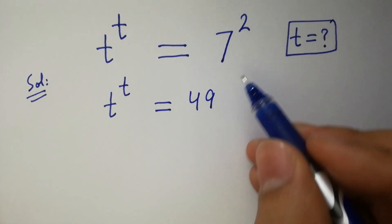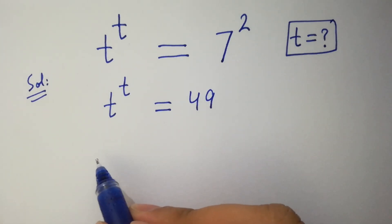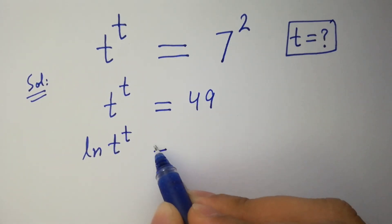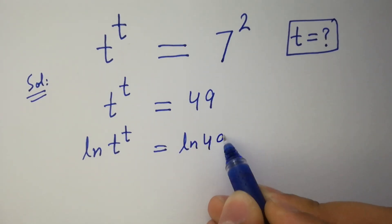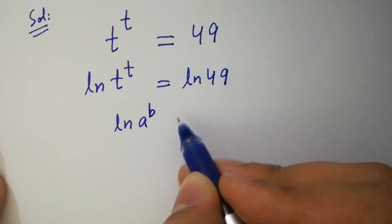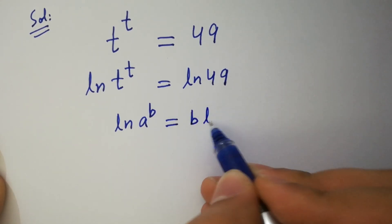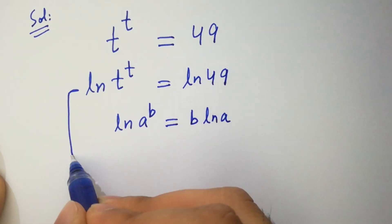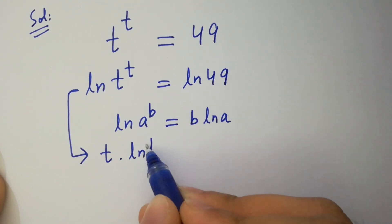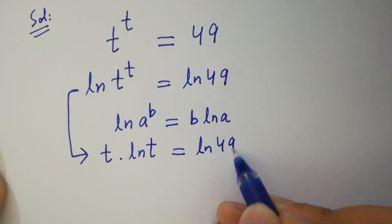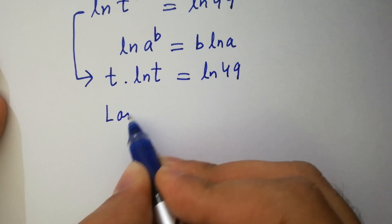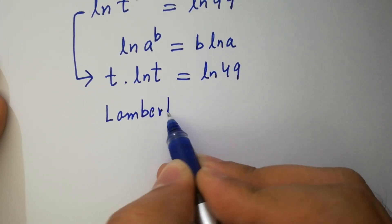Since 7 squared is 49, take natural log ln on both sides. Since ln of a to the power b equals b ln a, it will be t ln t equal to ln 49.